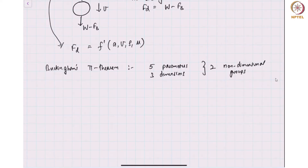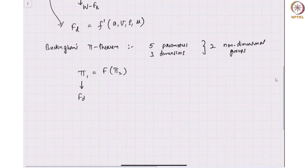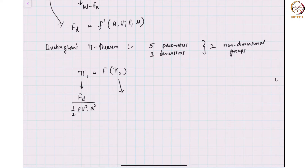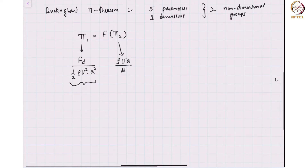I am not going to derive the Buckingham Pi theorem here; in this particular case I will directly write what are the non-dimensional groups. I can now have a relationship between one non-dimensional number and another. One of the non-dimensional numbers relevant here is the drag force divided by half rho u squared times some area. The other non-dimensional number, pi_2, is the velocity of the particle, the size of the particle, and the viscosity of the surrounding fluid. You can clearly see that the left-hand side is usually referred to as a drag coefficient and the right-hand side is the Reynolds number.